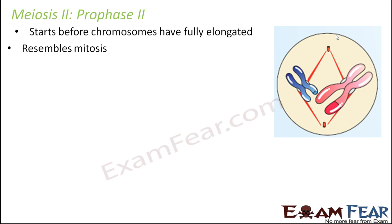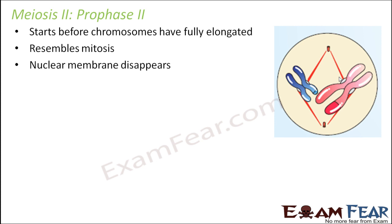So what happens in prophase 2? Meiosis 2 will resemble mitosis to a large extent. The centrosomes will again start to migrate to opposite poles — the centrioles and spindle fibers will begin to form for the second meiotic division. The microtubules will connect to the kinetochores. The nuclear membrane and nucleolus will again disappear, and the chromosomes become compact.